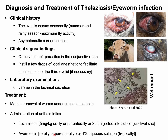Topical application of a one percent aqueous solution of ivermectin can also be done. Prevention of telagiosis or eyeworm infection is very difficult because of the ubiquitous nature of the fly vectors.